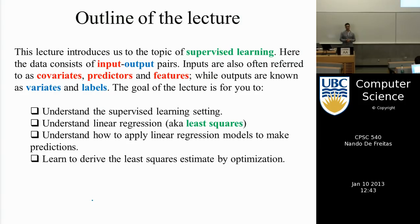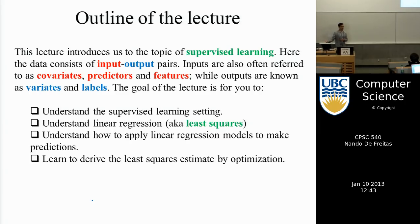Machine learning for linear prediction is essentially what's also known as linear regression. Most of you have seen least squares before, and that's what we're going to revise today. This will allow me to introduce the language. In statistics, inputs are also called covariates; outputs are called variables because they vary as a function of the inputs. Inputs are also known as features or predictors, and outputs are also known as labels.